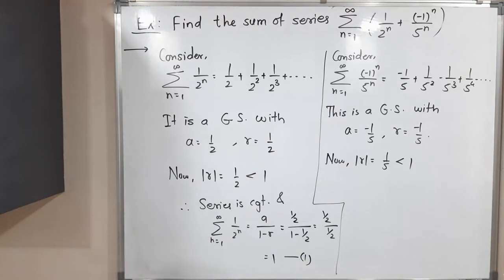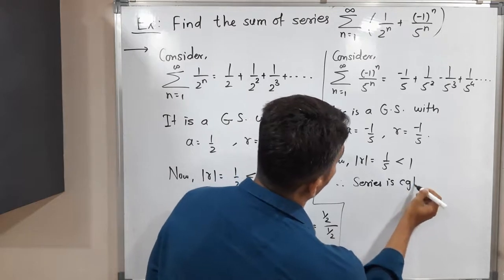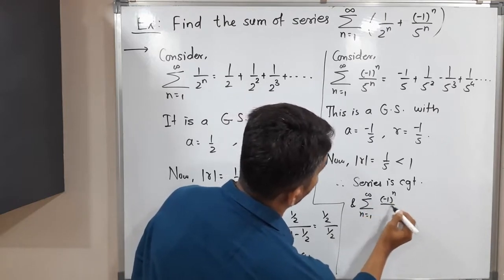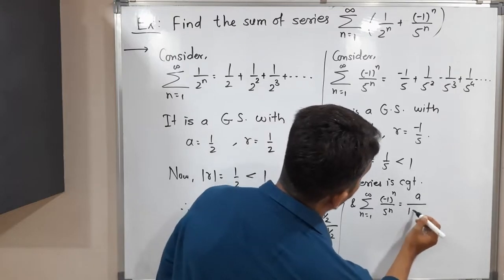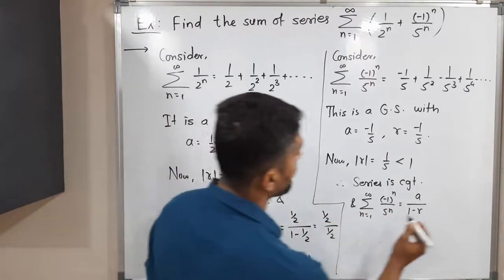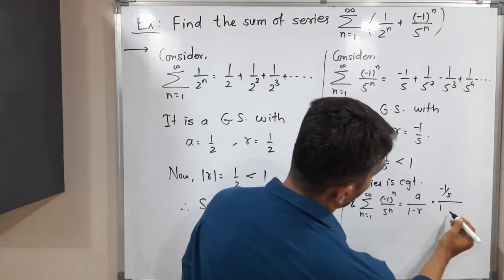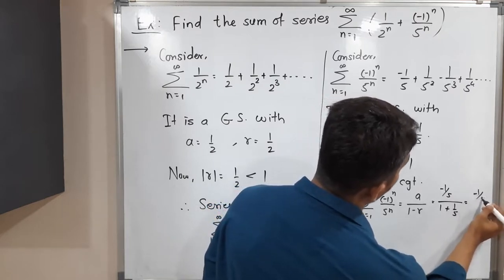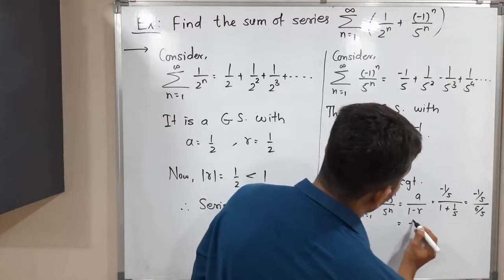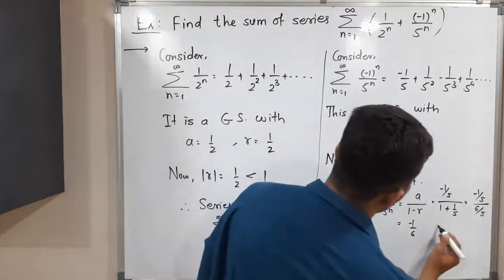Since |r| < 1, the geometric series is convergent. The sum of this series is a / (1 - r), with a = -1/5 and r = -1/5. So we get (-1/5) / (1 - (-1/5)) = (-1/5) / (6/5). Cross-multiplying, the 5s cancel and we get -1/6. So the second series converges to -1/6.